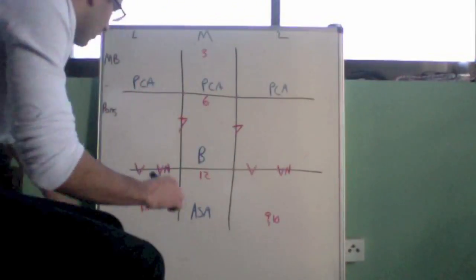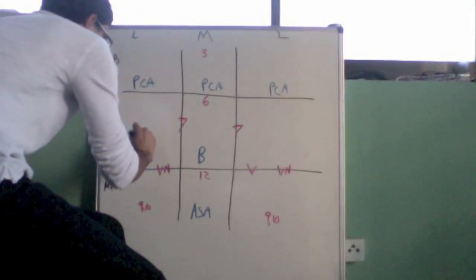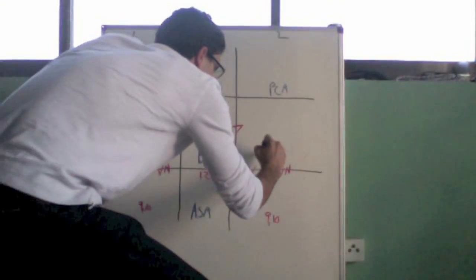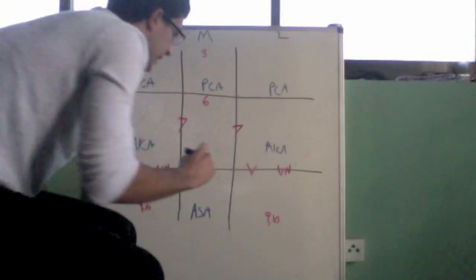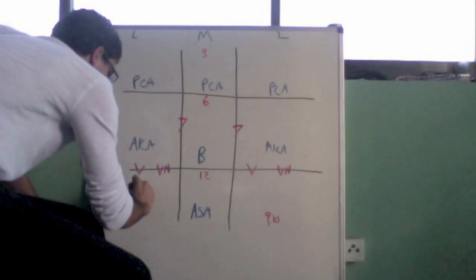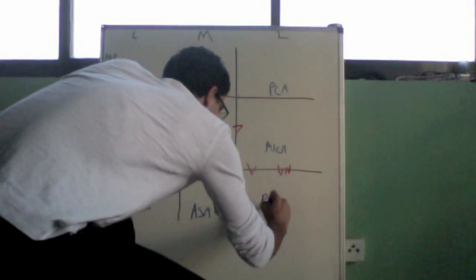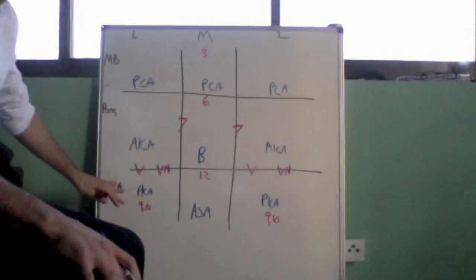Up here in the lateral pons, it's going to be supplied by the AICA. And naturally, if the AICA's up here, we're going to put the PICA down here. So now we have where all the arteries go.